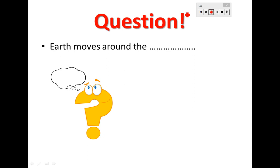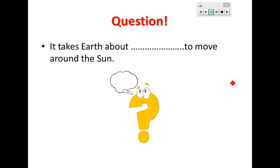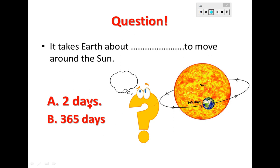Let's check if you understood today's lesson. First question: Earth moves around the — I'll show you a picture as a hint. Earth is moving around what? Yes, Earth moves around the Sun. Second question: it takes Earth about how long to move around the Sun? Your choices are: a) two days, or b) 365 days. What's your answer?